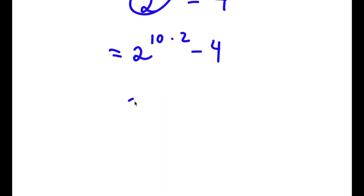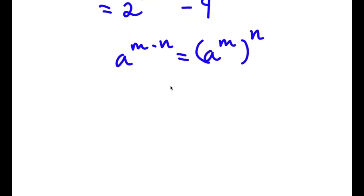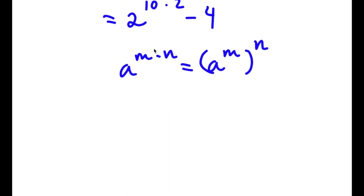If I have something in the form a to the power of m times n, this is equal to a to the power of m to the power of n. So 2 to the power of 10 times 2, I can rewrite as 2 to the power of 10 to the power of 2.